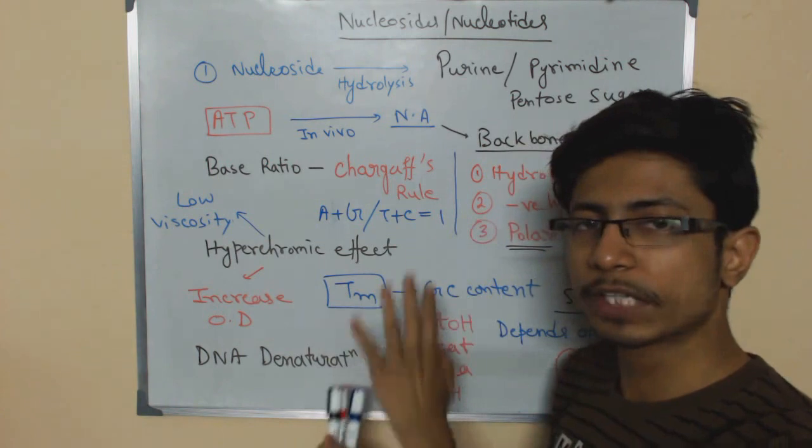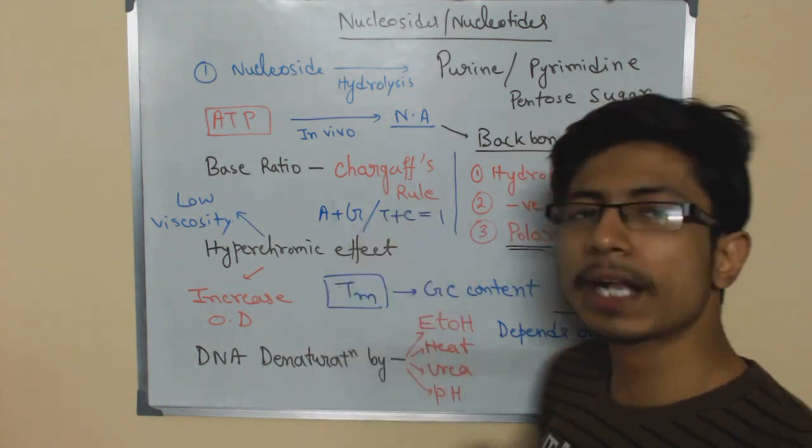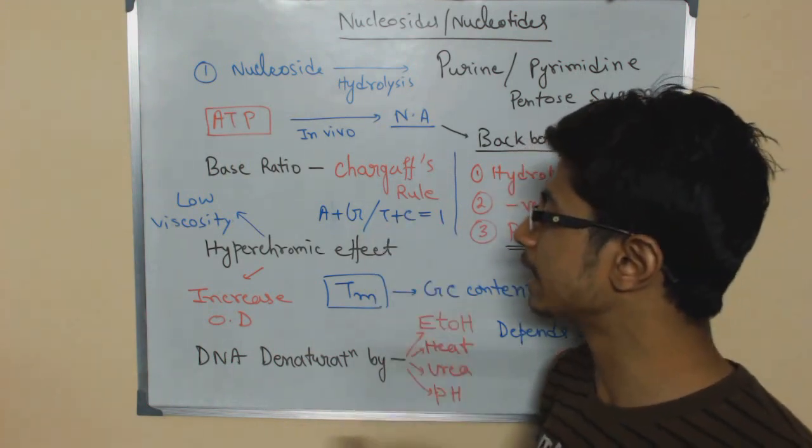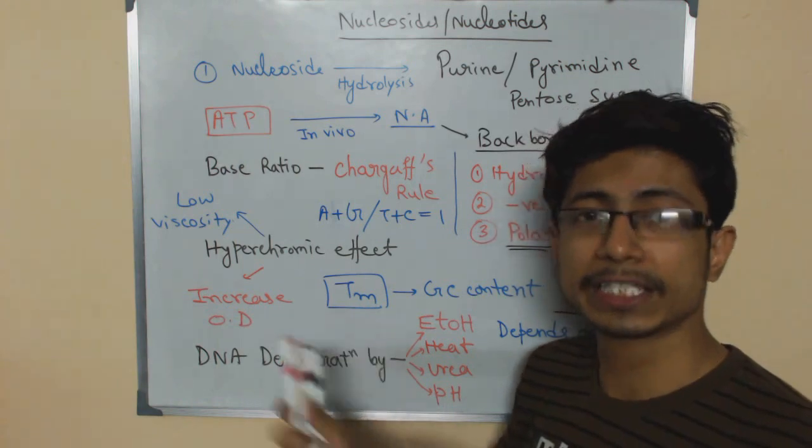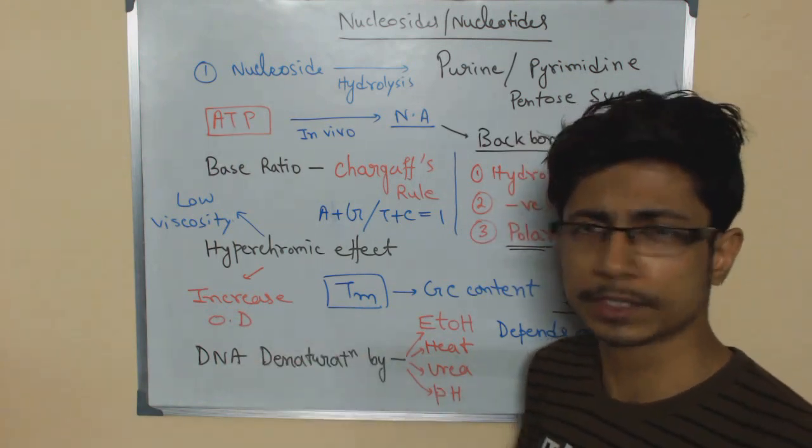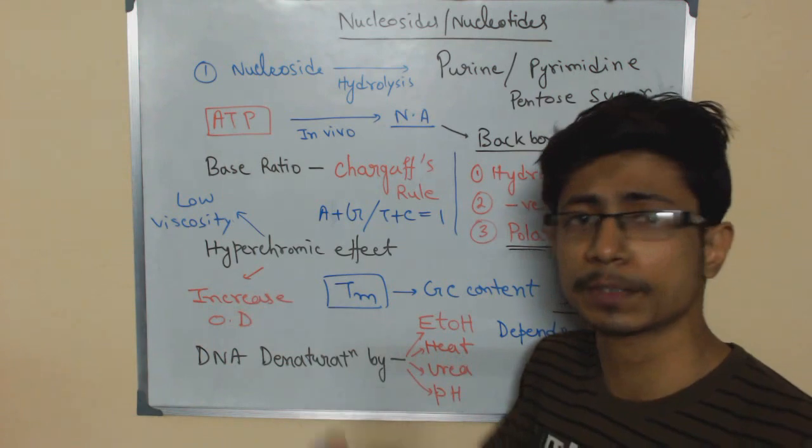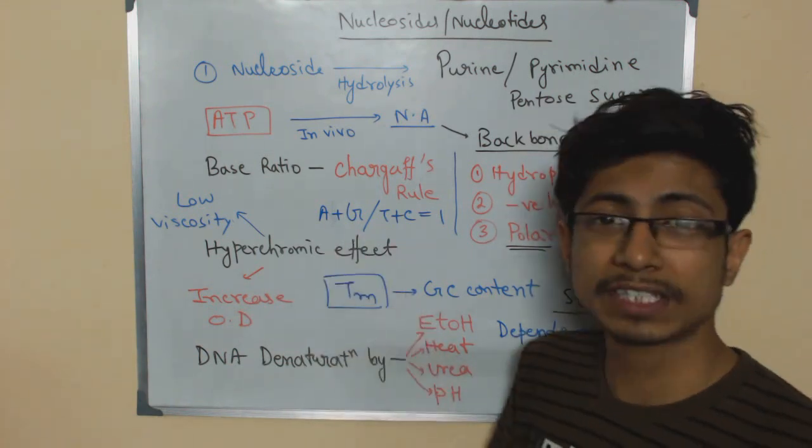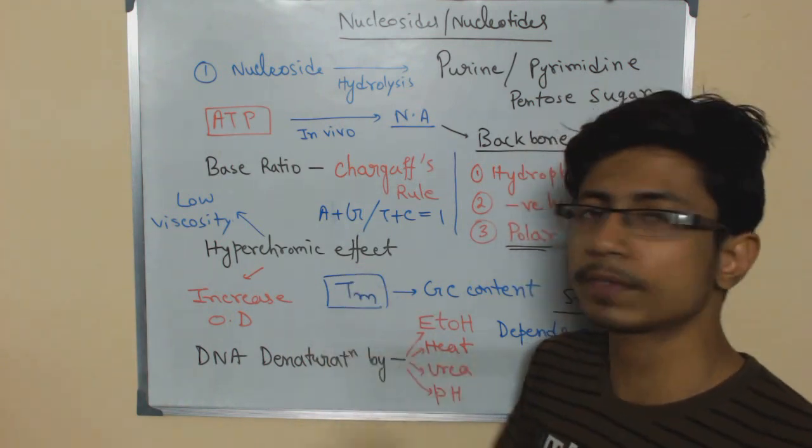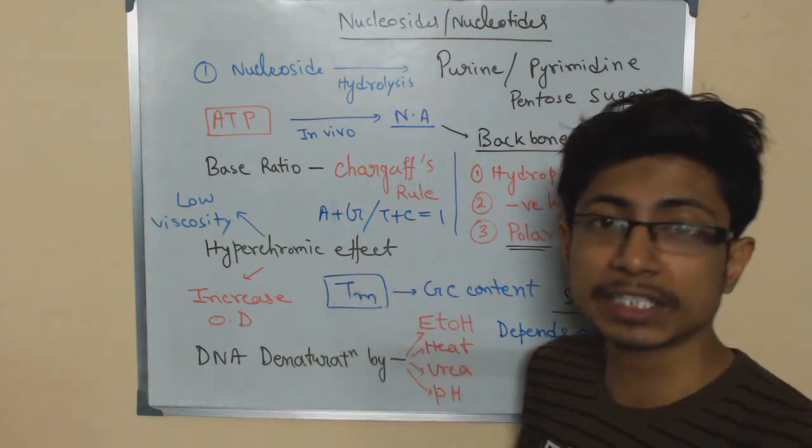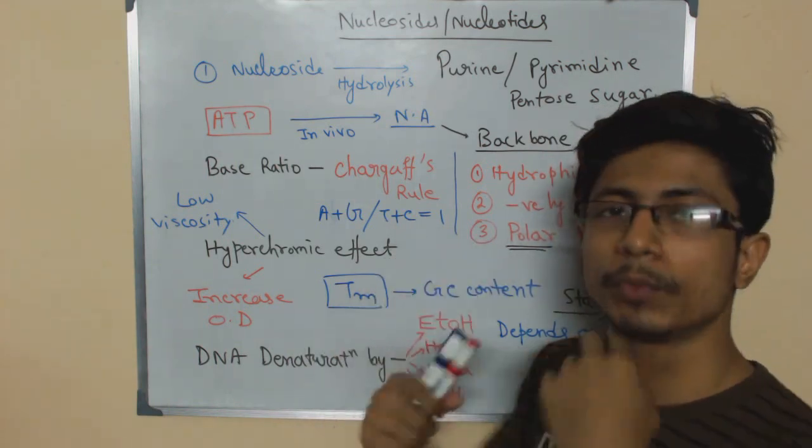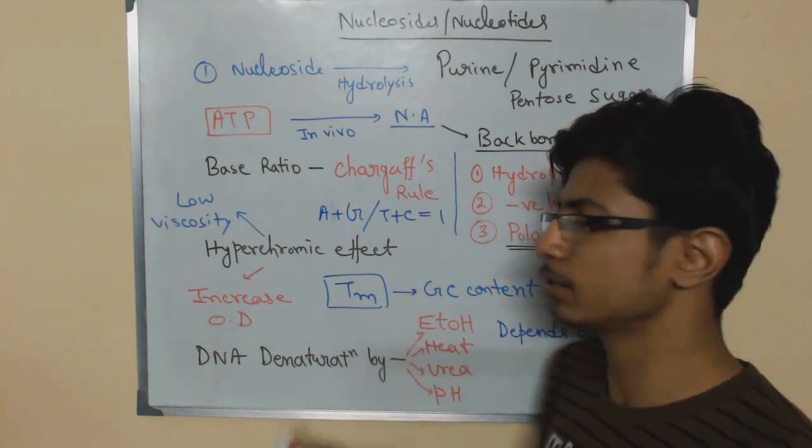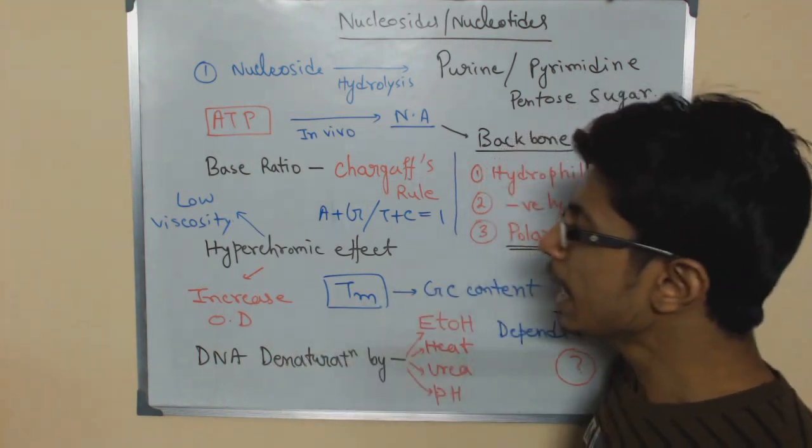Now there are many problems that may be asked from the Chargaff's rule. They might tell you that let's say A is present 20 percent or A and G is present 40 percent. What will be the ratio for C? What is the percentage of C? What is the percent of T? For example, A plus G is 40 percent. So what is the percentage of T there? So A plus G is 40, so T plus C is 60 in that case. Each of them, that is T and C, will be, if it is distributed in the same fashion, it will be 30, 30 and something like that. So that's how the questions can be asked.